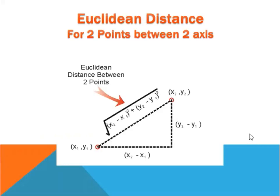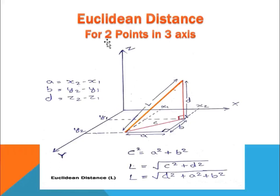Throughout this video we calculated the Euclidean distance. I want to help you visualize what Euclidean distance actually looks like. Suppose there are two points (x1, y1) and (x2, y2). The x-coordinate distance between the two points is x2 minus x1, and the y-coordinate distance is y2 minus y1. For three axes x, y, and z: 'a' is the x-distance (x2 - x1), and 'b' is the y-distance (y2 - y1).